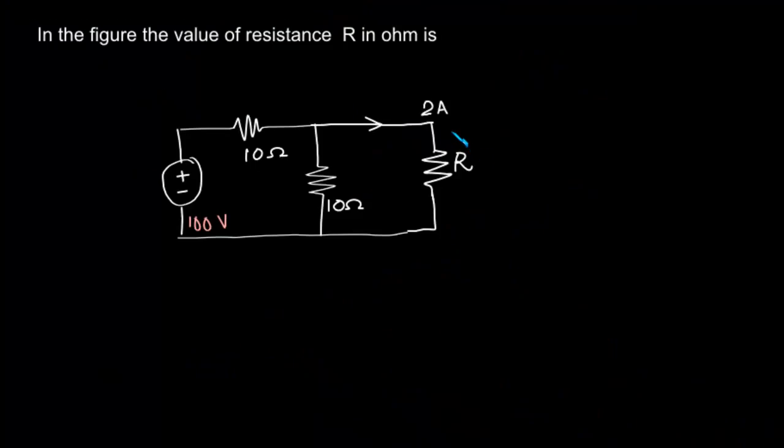This was asked in 2004. In the figure, the value of resistance R in ohms is to be found. We have a 100 volt source and two 10 ohm resistors. The easiest way will be to find the voltage at this point.